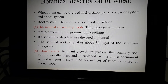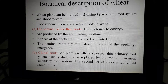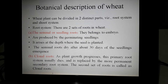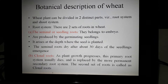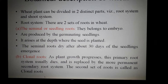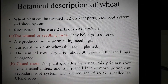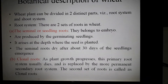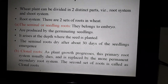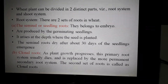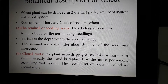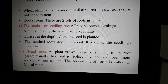The root system is below the ground. There are two types of roots in wheat. The first type is known as the seminal root or seedling root. These seminal roots belong to the embryo and are produced by the germinating seedlings. They arise at the depth where the seed is planted. The seminal roots dry after 30 days of seedling emergence.